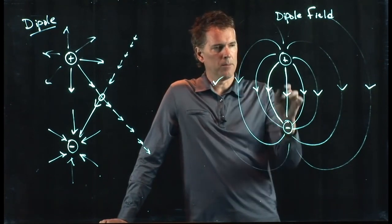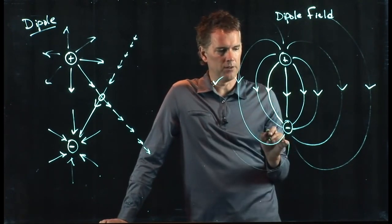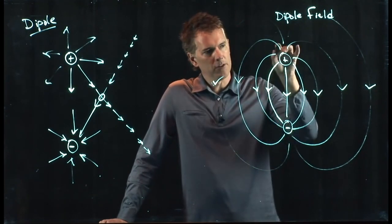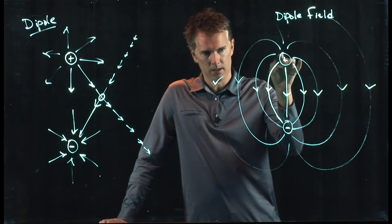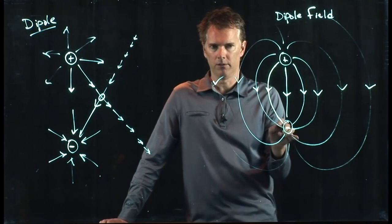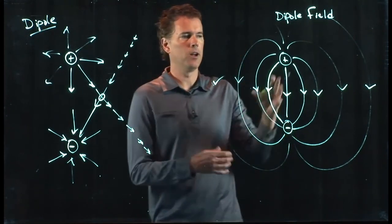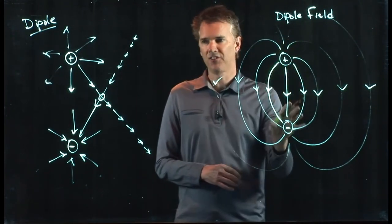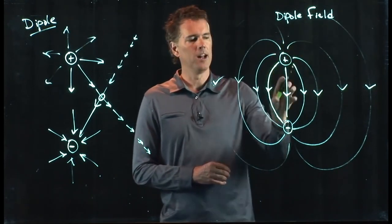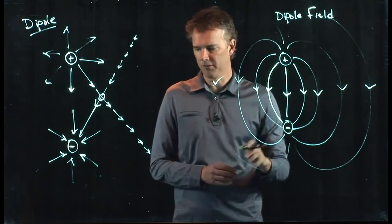Now, when you think about positive and negative charges and you talk about field lines, what you can say is field lines originate on positive charges and they terminate on negative charges. And this is often referred to as the source and the sink of the electric field. Positive charges are the sources, negative charges are the sinks.